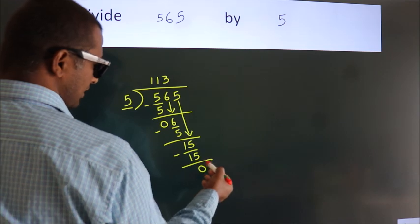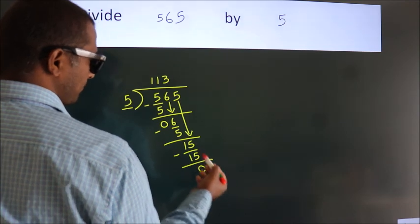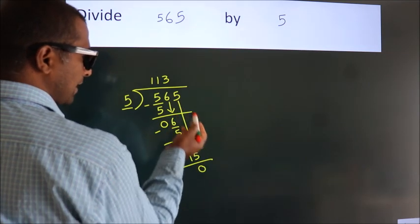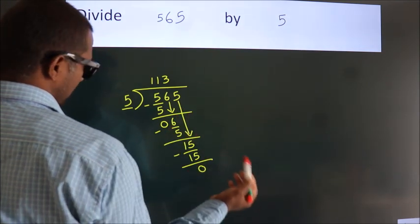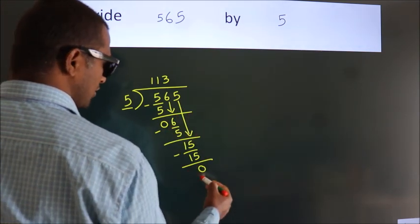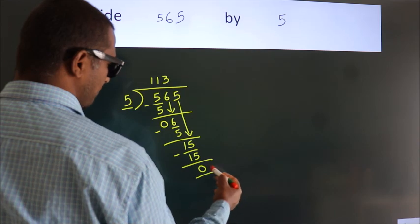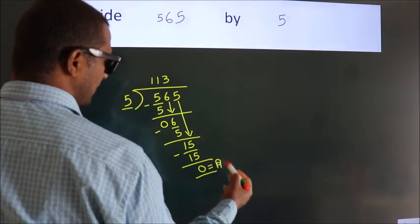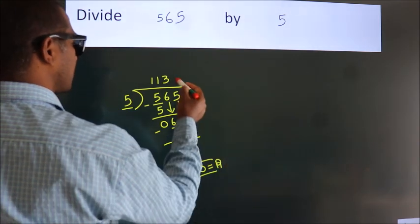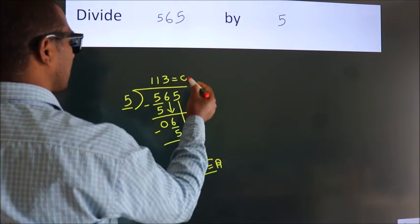After this, there are no more numbers to bring down, so we stop here. This is our remainder, and this is our quotient.